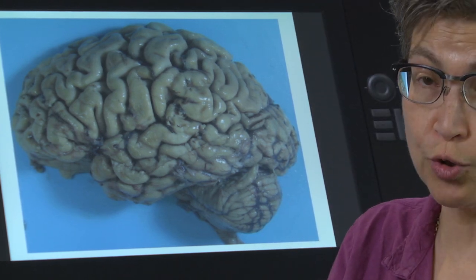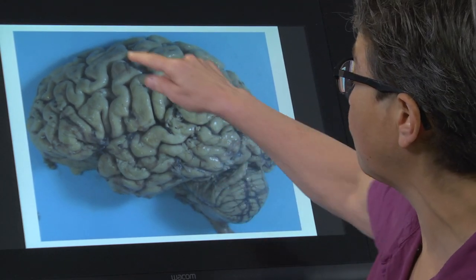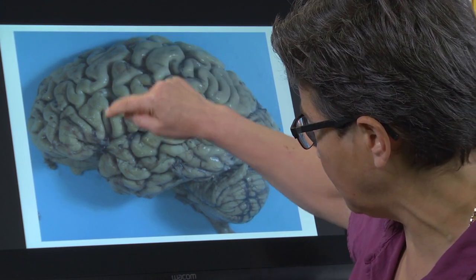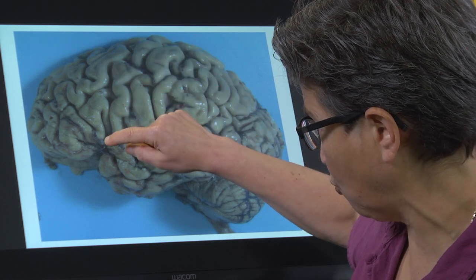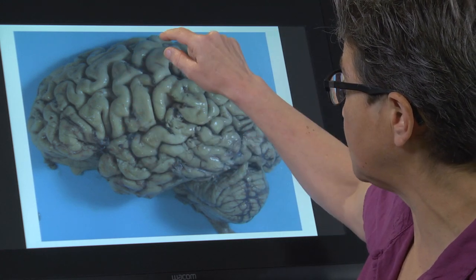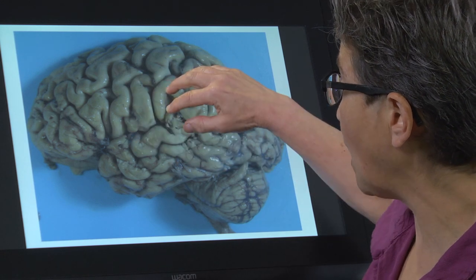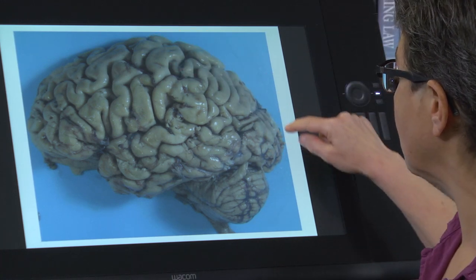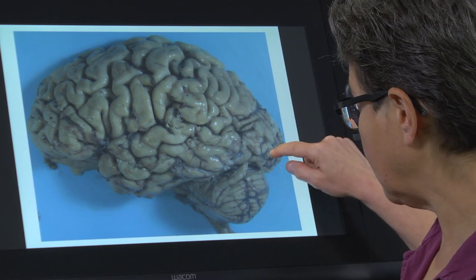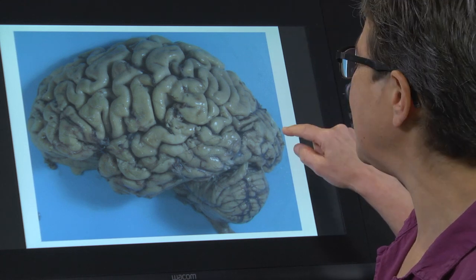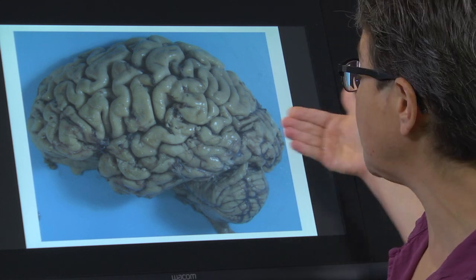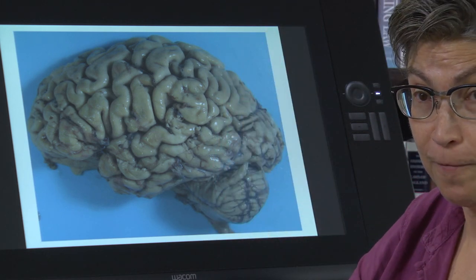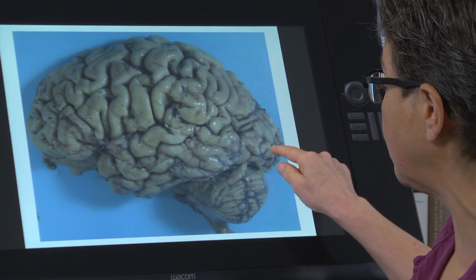In each of these lobes there is a primary cortex. In the frontal lobe, just anterior to the central sulcus, is primary motor cortex. Just caudal to the central sulcus in the parietal cortex is primary somatosensory cortex. Back here in the occipital lobe is primary visual cortex, most of which is present on the medial surface of the hemisphere — a little bit peaks around on the convexity, but most of it is on the medial surface.